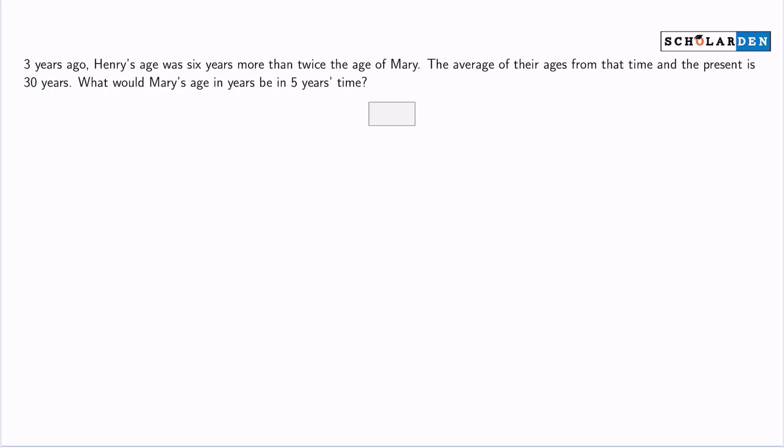Three years ago, Henry's age was six years more than twice the age of Mary. The average of their ages from that time and the present is 30 years. What would Mary's age in years be in five years' time?